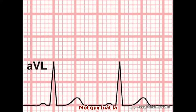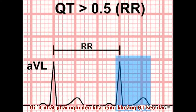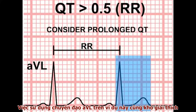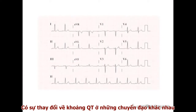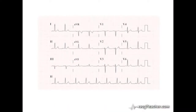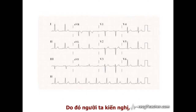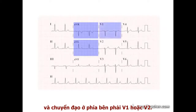As a simple rule of thumb, when you look at an ECG, if the observed QT interval is more than half the RR interval, at least consider the possibility of prolonged QT. The use of AVL in this example is quite deliberate. There is variation in the length of the QT interval between different leads, and for technical reasons it can be difficult to identify the end of the T wave in many leads. It is recommended therefore that you analyse the QT interval in one of four leads: AVL, AVR, or one of the right-sided chest leads, V1 or V2.